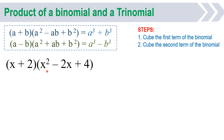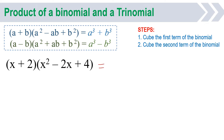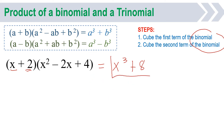x plus 2, times x squared minus 2x plus 4. Let us check first if this is really a special product. The first and last term must be the square of the first and last term of your binomial: x squared comes from x, and 4 comes from 2 squared — correct. The middle term, the combination of x and 2, gives us 2x. Now proceeding with the answer: cube the first term x to get x cubed, then cube the second term 2: 2 times 2 times 2 equals 8. So the answer is x cubed plus 8.